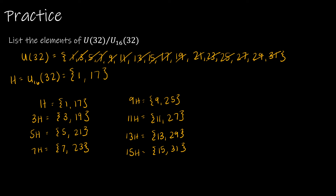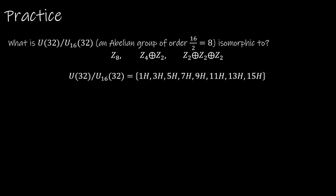We have partitioned the set, and we can list the elements as H, 3H, 5H, and so on. This factor group has order 8 — either because there are 8 elements, or because |U32|=16 and |U16(32)|=2. With 8 elements, it must be isomorphic to Z8, Z4×Z2, or Z2×Z2×Z2.